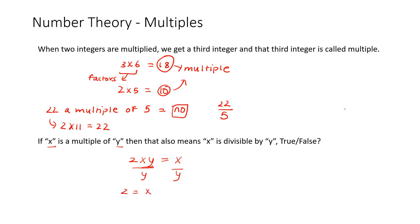So if x is a multiple of y and is also divisible by y, that means that x divided by y has to give us an integer, which it does. And so this statement is true.